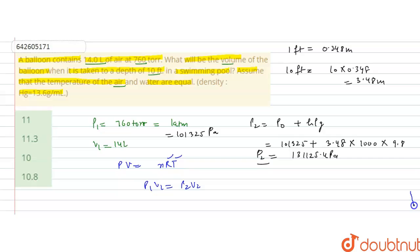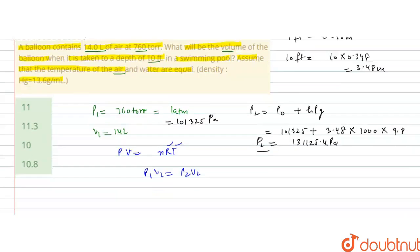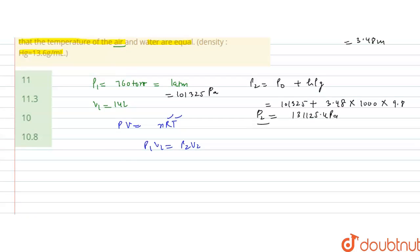So we can apply this to calculate the volume of the balloon when it is taken to depth of 10 feet. So V2 will be P1V1 divided by P2. So that is equal to P1 is 101325 Pascal, into volume is given 14 liters divided by the final pressure at the depth, that is 131125.4 Pascal. So this will be cancelled.